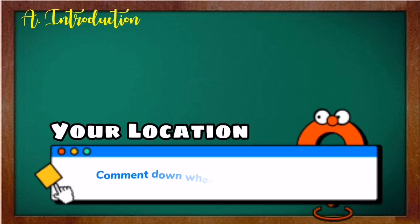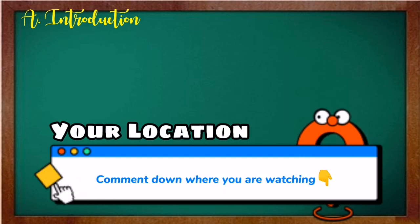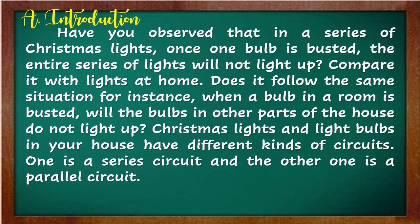This time, we will learn about the effects of changing the number of components in a circuit. Have you observed that in a series of Christmas lights, once a bulb is busted, the entire series of lights will not light up? Compare it with lights at home — when a bulb in a room is busted, will the bulbs in other parts of the house also not light up? Christmas lights and the light bulbs in your house have different kinds of circuits. The Christmas lights are series circuits and the bulbs in your home are parallel circuits.